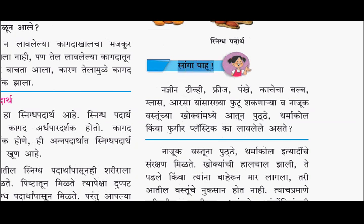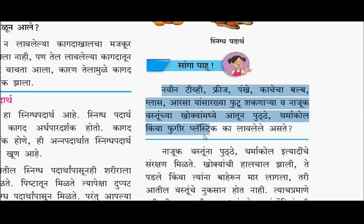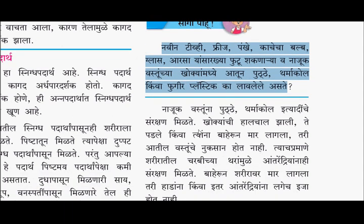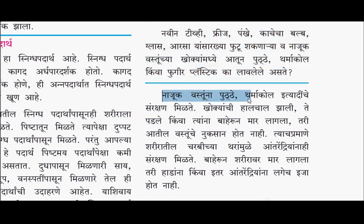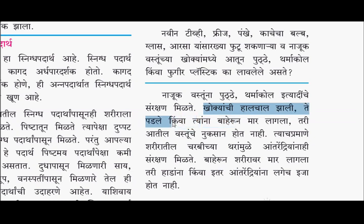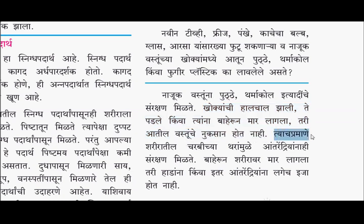सांगा पाहू: नवीन टीव्ही, फ्रीज, पंखे, काचेचा बल्ब, ग्लास, आरसा यांसारख्या फुटू शकणाऱ्या व नाजूक वस्तूंच्या खोक्यात आतून पुठ्ठा, थर्माकोल किंवा फुगीर प्लास्टिक का लावलेले असते? नाजूक वस्तूंना पुठ्ठा, थर्माकोल इत्यादींचे संरक्षण मिळते. खोक्याची हालचाल झाली, ते पडले किंवा त्यांना बाहेरून मार लागला तरी आतील वस्तूंचे नुकसान होत नाही. त्याप्रमाणे शरीरातील चरबीच्या थरामुळे आंतरिक अवयवांना संरक्षण मिळते. बाहेरून शरीरावर मार लागला तरी हाडे व इतर अवयवांचे नुकसान होत नाही.